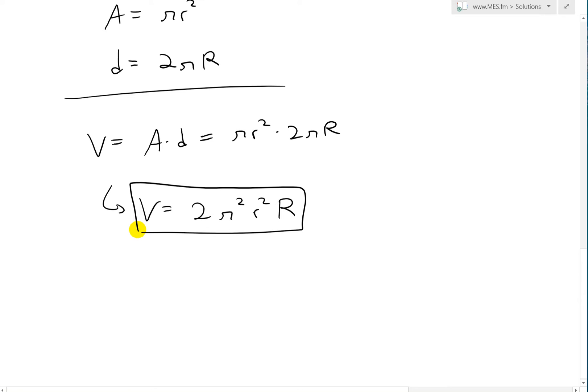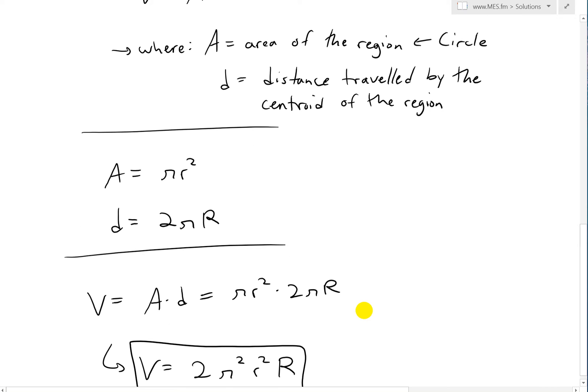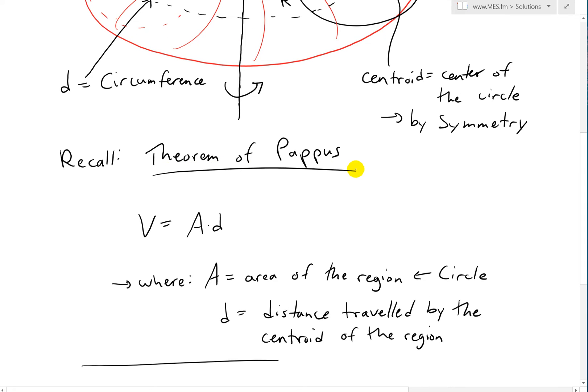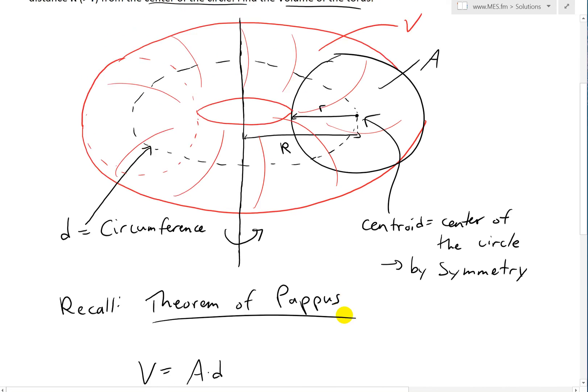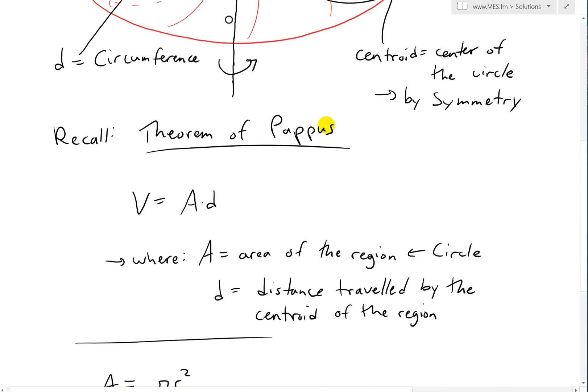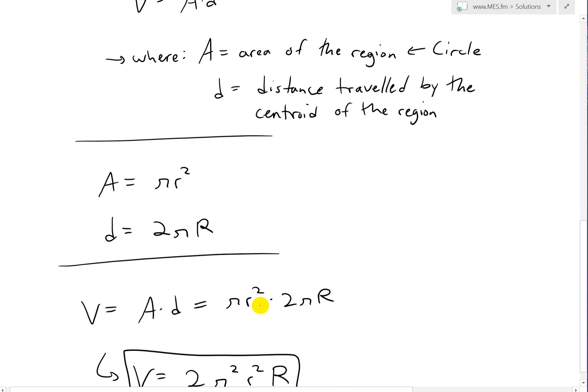So there, that's the volume of this torus, or this ring, which is pretty remarkable how we could solve it fairly easily just by using the theorem of Pappus. And in a later video, I'll show how you could solve this using integrals, and it's a much more tedious way to do it, instead of just doing this really quickly.